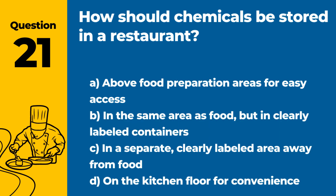Question 21. How should chemicals be stored in a restaurant? Answer: C. In a separate, clearly labeled area away from food. Storing chemicals properly ensures they don't contaminate food or food contact surfaces.